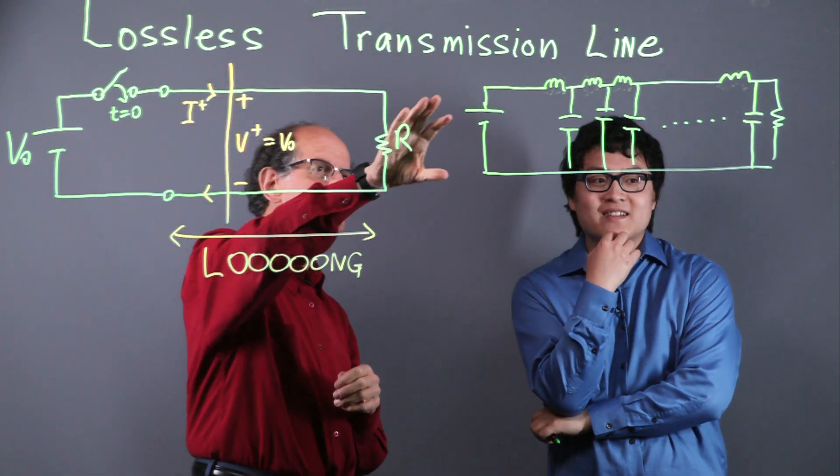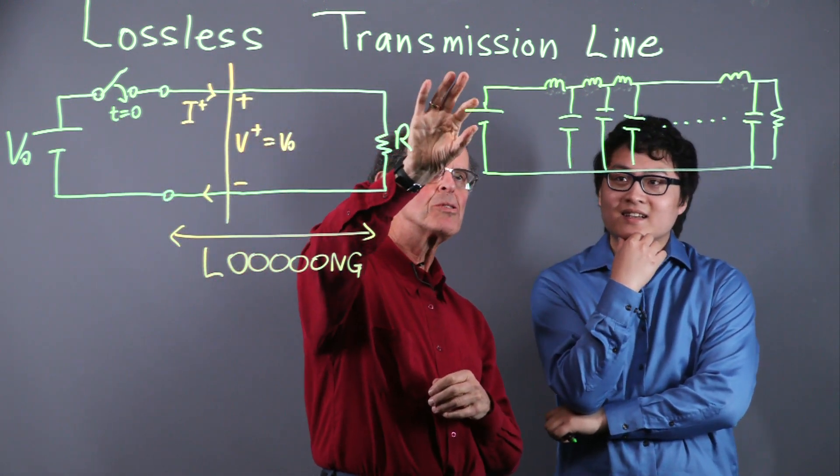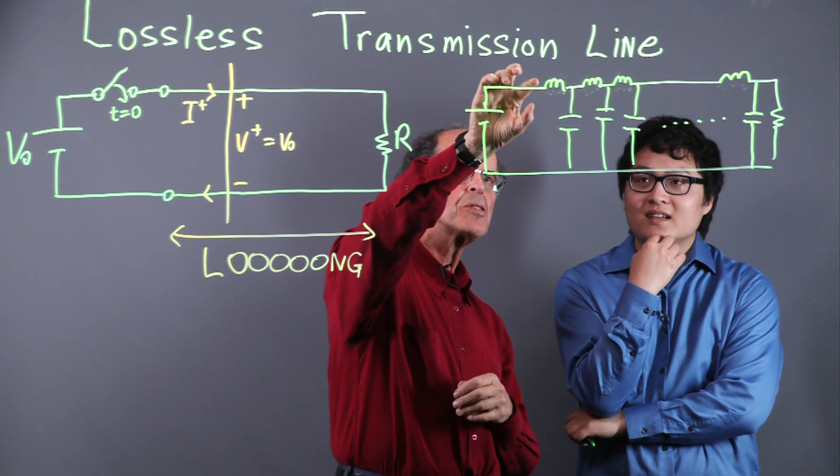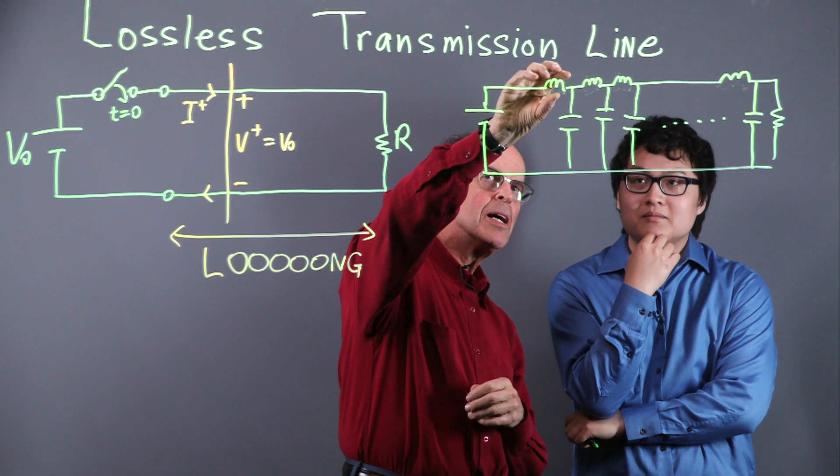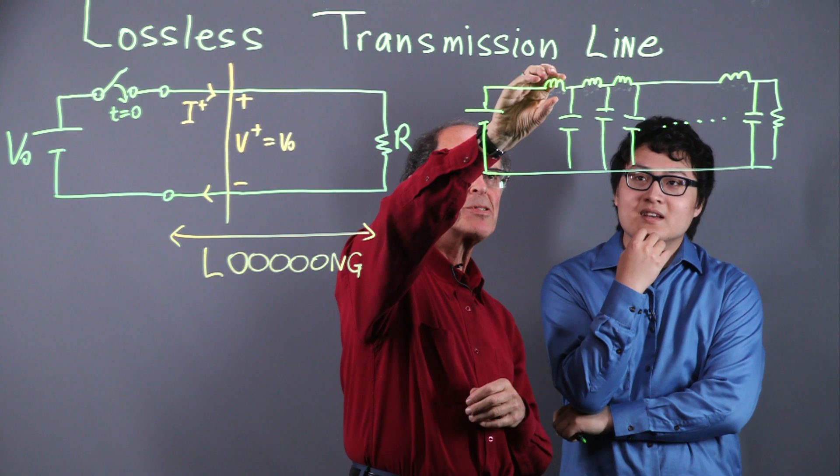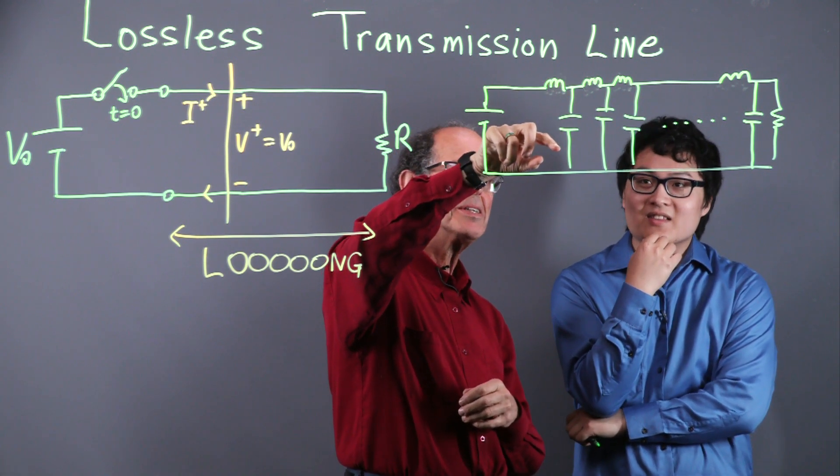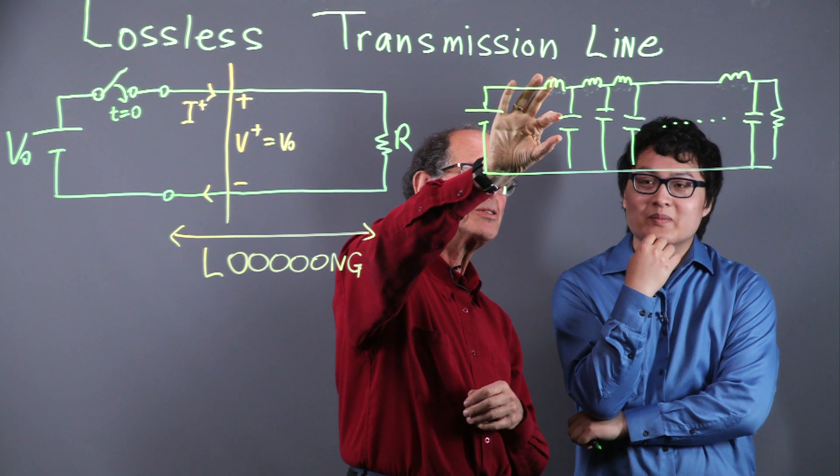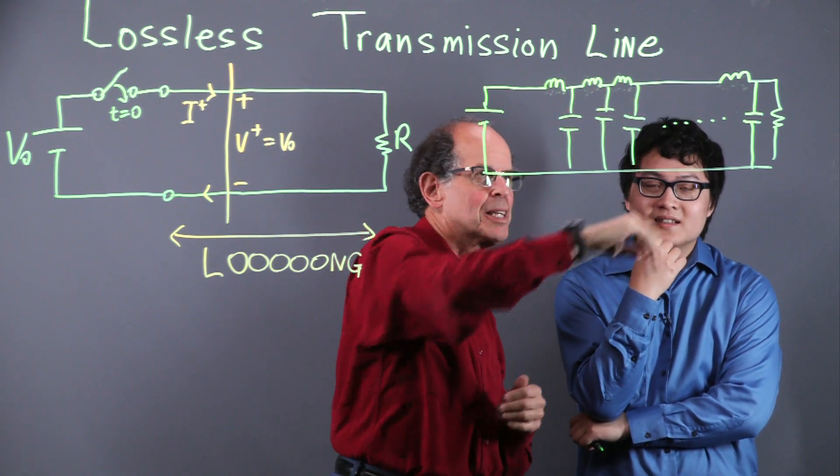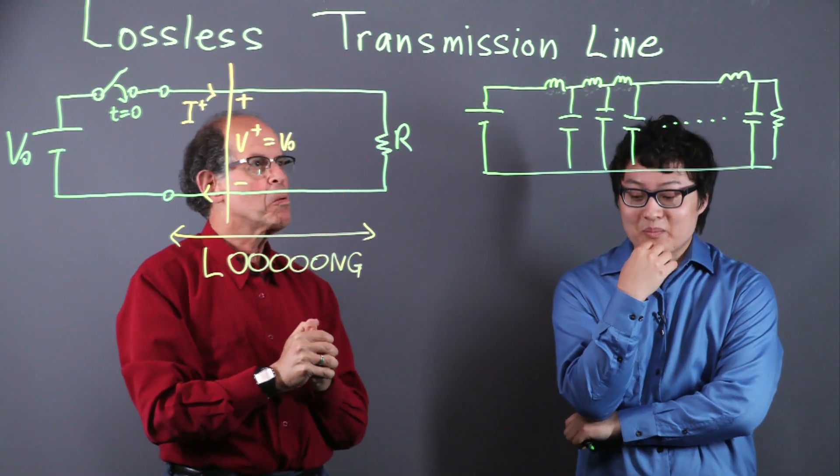Yeah, I kind of like that because if we have closed the switch, current's going to start to move. It's going to be delayed here. And then when the field collapses in the inductor, current gets dumped into the capacitor. That's right. When the capacitor charges up, then it's going to travel down the line and that'll give us a delay. Beautiful.